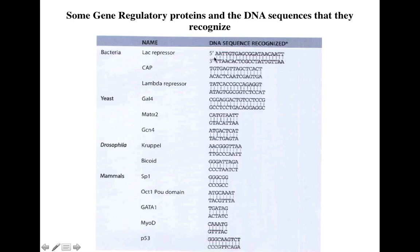The lac repressor recognizes a specific operator sequence and binds to it. The catabolite activator protein CAP recognizes its own specific DNA sequence, and wherever CAP finds that sequence on the DNA it will bind to it — that constitutes the DNA binding domain for CAP. The same principle applies to lambda repressors, GCN4, bicoid, SP1, MyoD — which we will study later — and p53, which recognizes its own specific DNA sequence.